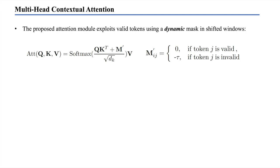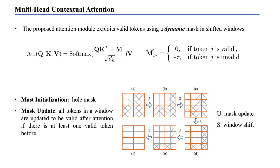For multi-head attention, to handle large feature maps and invalid tokens, we propose to use shifted windows and a dynamic mask to encode non-local interactions using a few valid tokens. The output is computed as the weighted sum of valid tokens. During the forward propagation process, the mask is initialized with the input mask and updated automatically. All tokens in the window are updated to be valid after attention, if there is at least one valid token before.